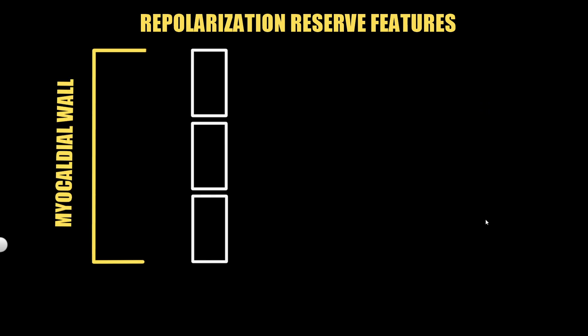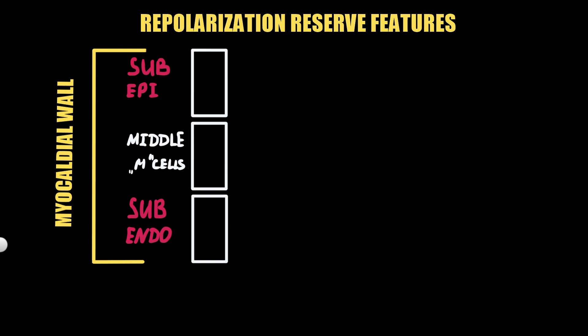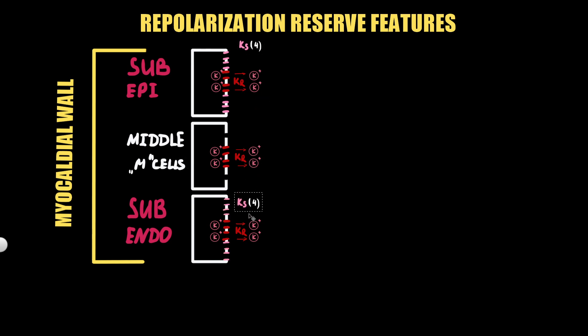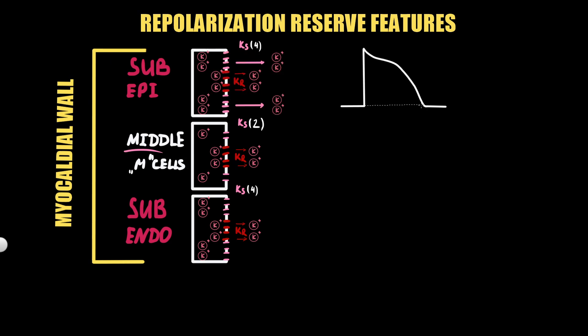Repolarization reserve has regional features. The myocardial wall can be divided into three parts: the epicardial layer, the endocardial layer, and mid-myocardial cells, also known as M cells, located between the two. Rapid potassium channels are distributed relatively equally through the ventricular myocardial wall. However, slow potassium channels, as a repolarization reserve unit, vary quantitatively — they are expressed more in epicardial and endocardial muscle than in mid-ventricular regions. In normal conditions, all repolarization currents provide action potentials with normal duration in all parts of the ventricular wall.